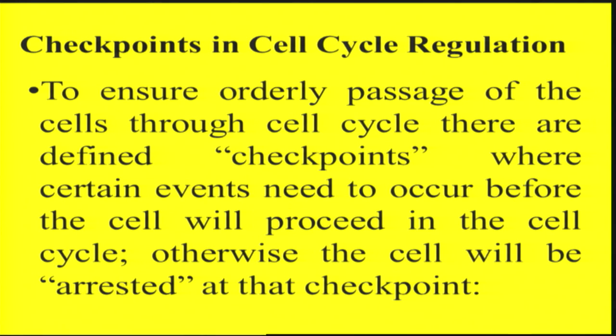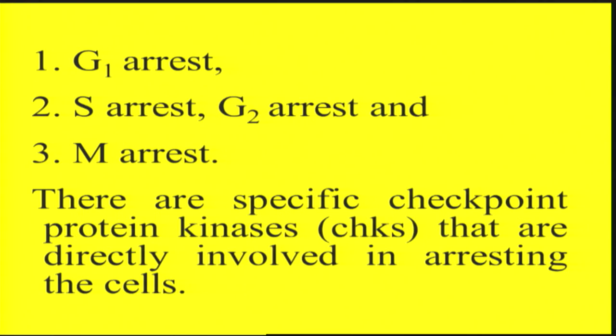At each checkpoint arrest the cell makes two decisions: either it will correct the problem, after which it moves to the next stage, or if the problem cannot be corrected, the cell will take a conscious decision to eliminate itself by apoptosis. So the cell cycle is connected with the apoptotic pathway, and cell cycle regulation is also connected with cancer. There are defined checkpoints where certain events must occur before the cell proceeds to the next stage; otherwise the cell will be arrested at that checkpoint.